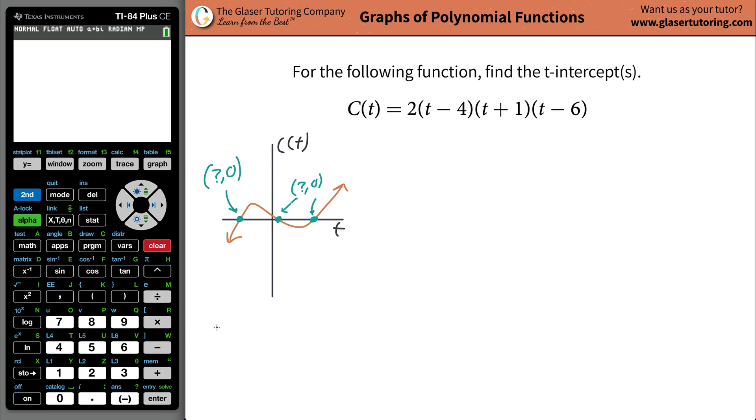So what that means is that the t intercepts or x intercepts will be the locations or the values of t when the y or when the function's value or in this case when the C(t) is equal to zero. That's what you got to keep in mind.